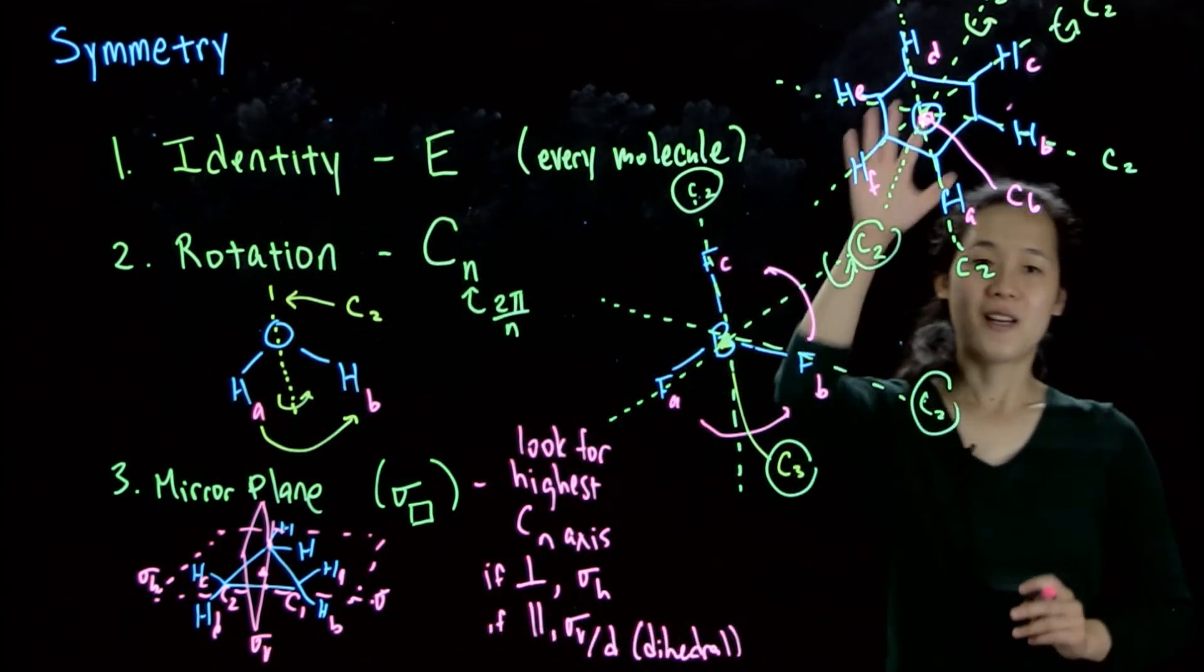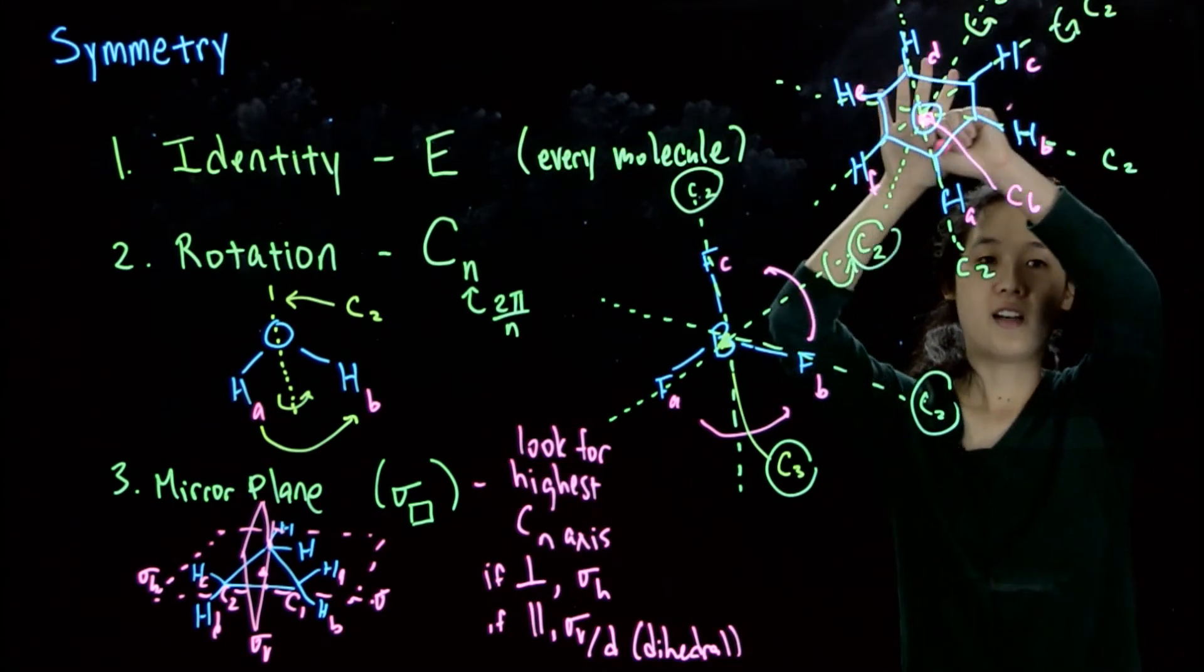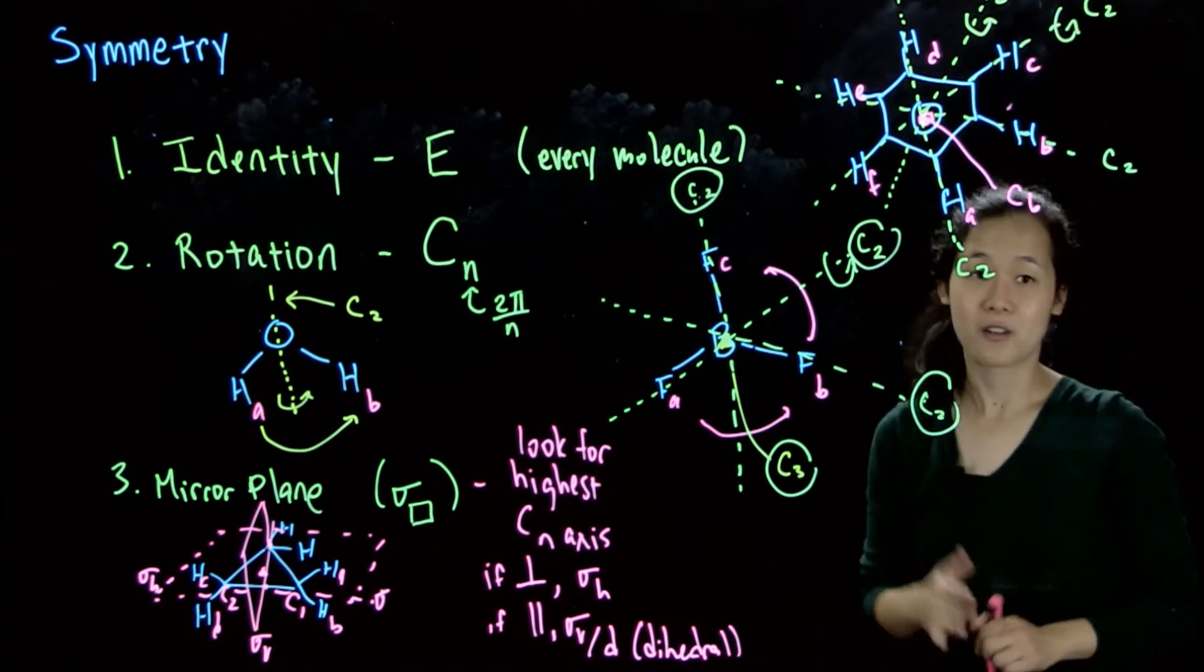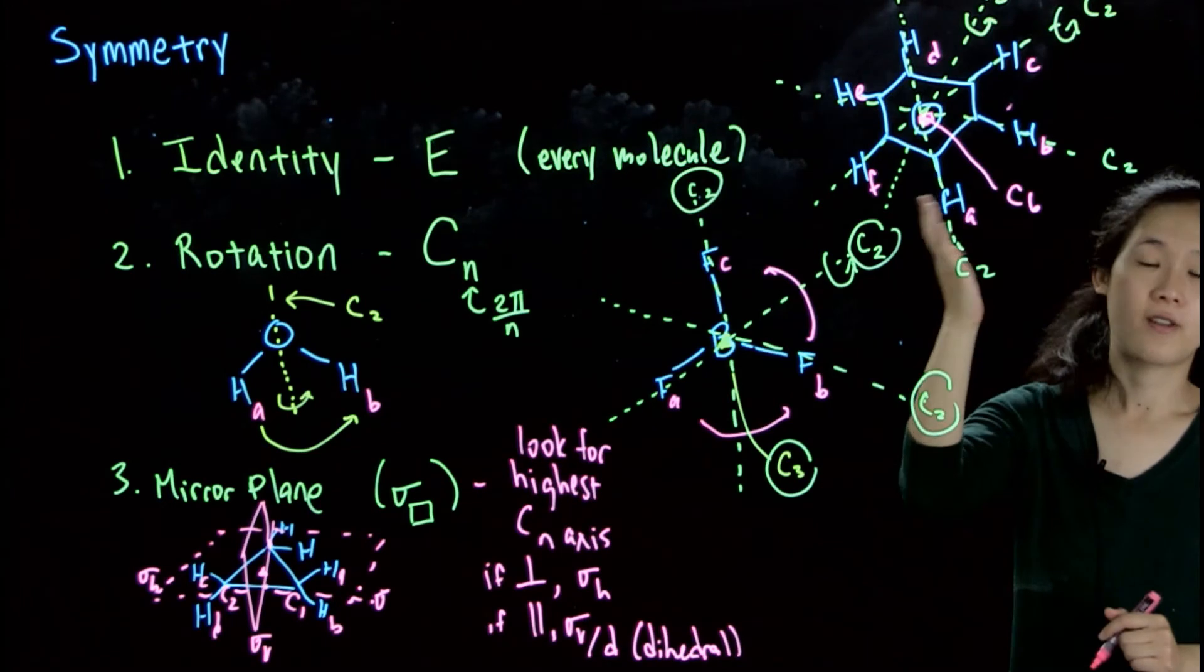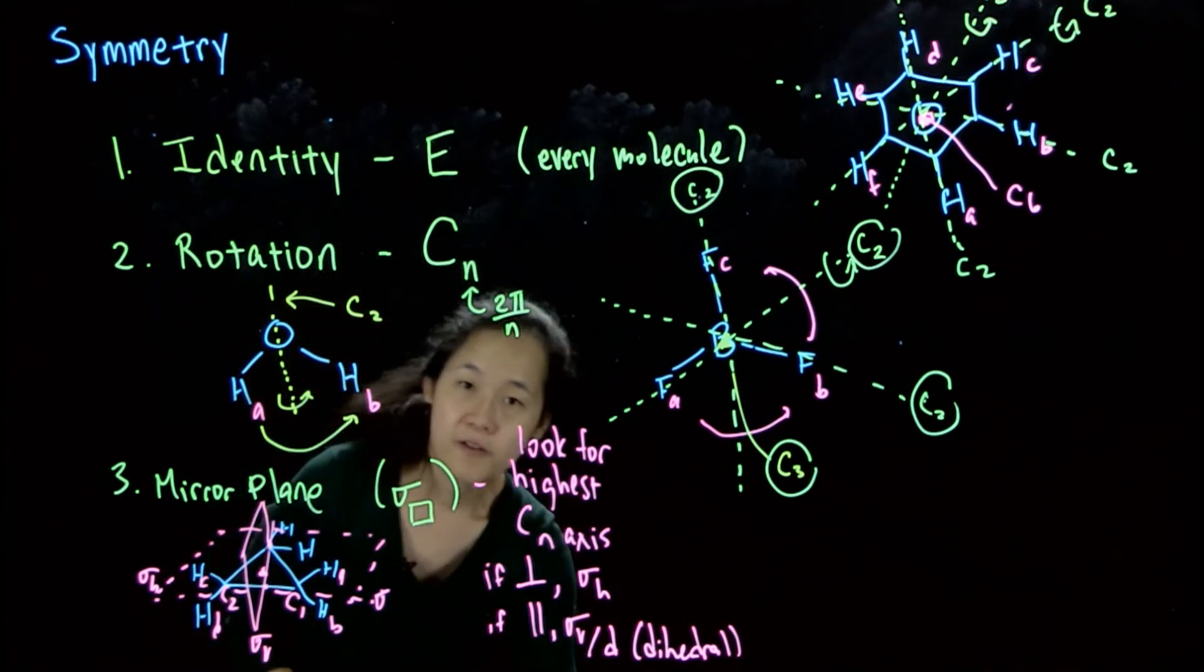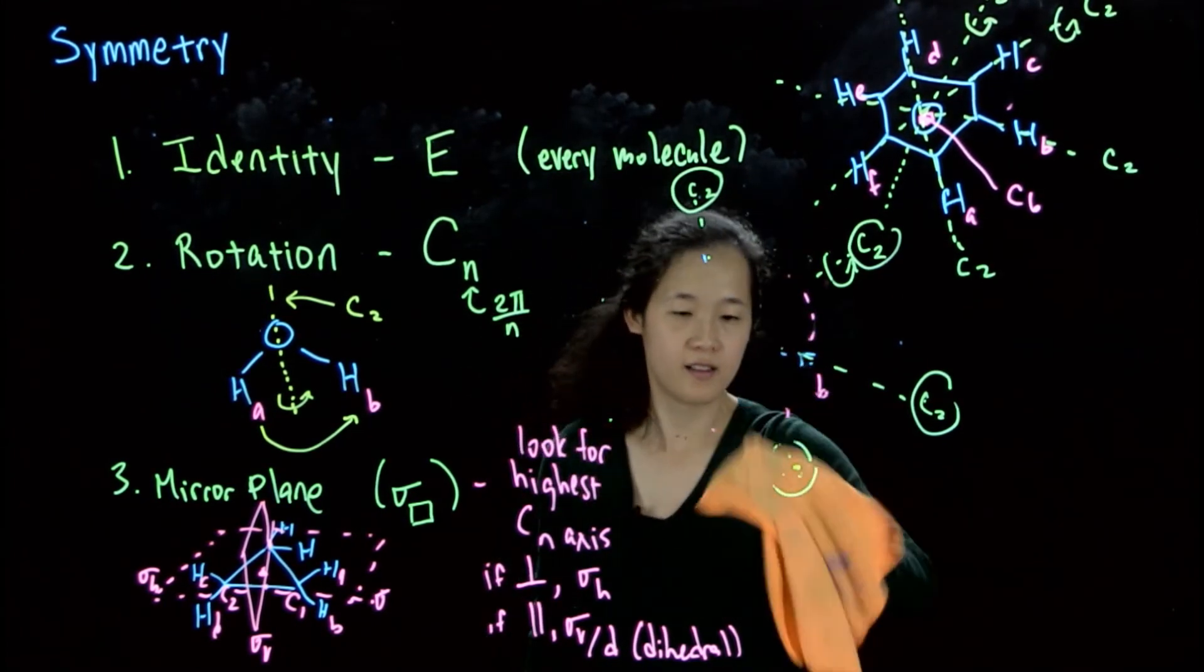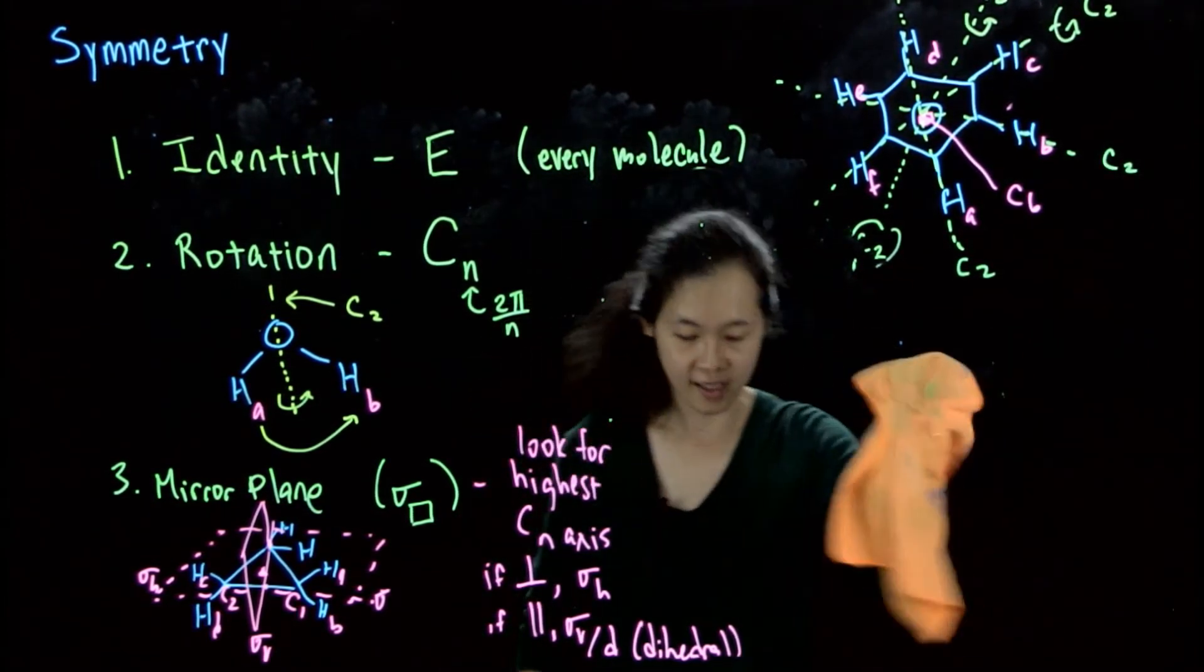So in the same way, if we go back to benzene, we have a mirror plane perpendicular. So in the plane of the benzene, it's perpendicular to that C6. And so that's the sigma H. And then we have a bunch of sigma Vs that I'll leave it to you to find. And those are going to be parallel to that C6 axis, because 6 is the highest rotational axis that we have. Let me do a quick erase, and we'll finish up our symmetry elements.